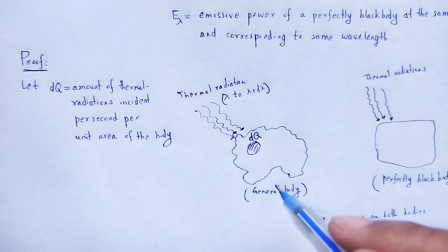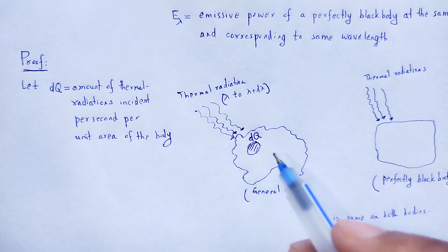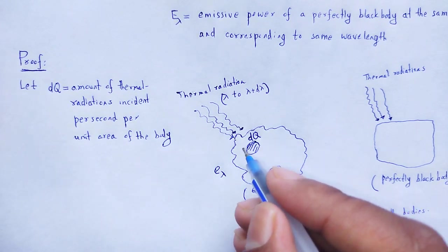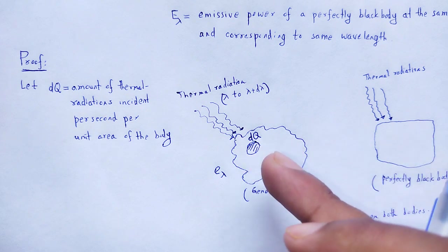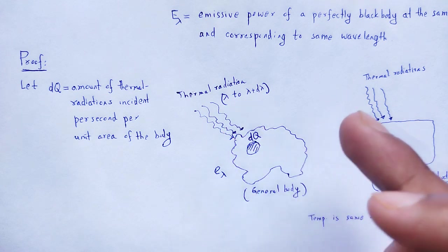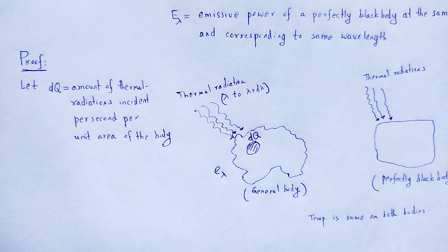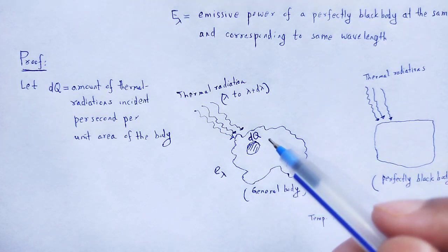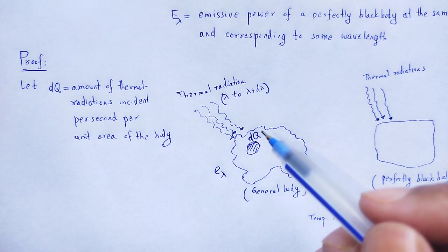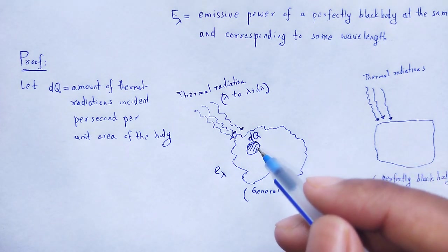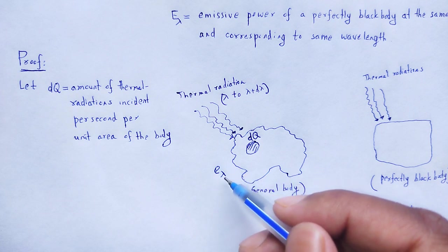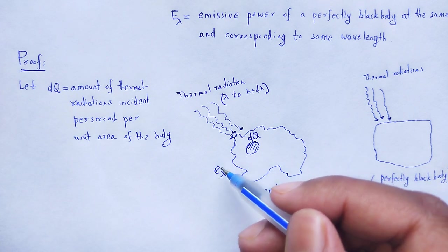E_lambda is the emissive power of that body corresponding to wavelength lambda. Emissive power is the amount of energy of thermal radiations emitted per unit time per unit area of the top surface — how much thermal radiation is emitted from that unit surface per unit time. E_lambda is the emissive power corresponding to wavelength lambda.